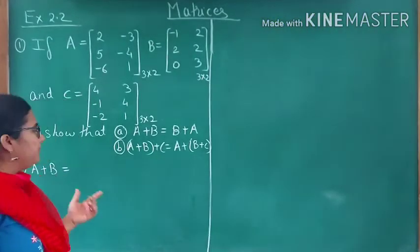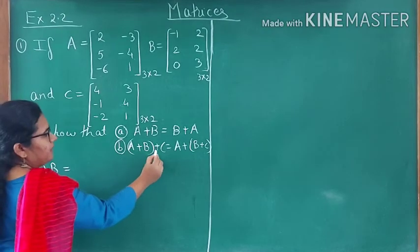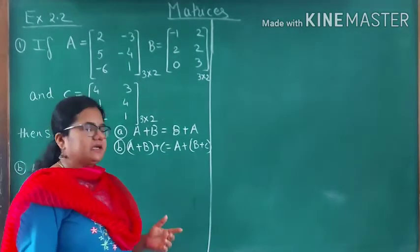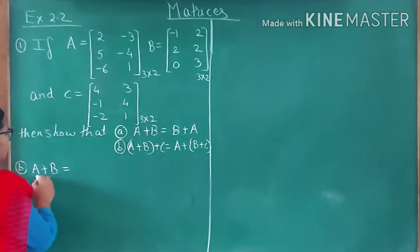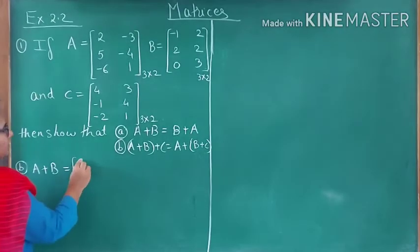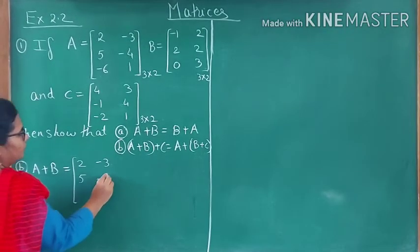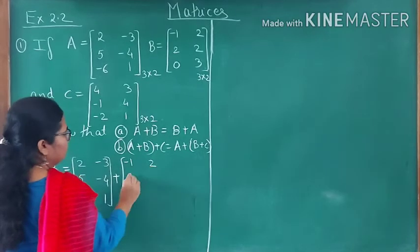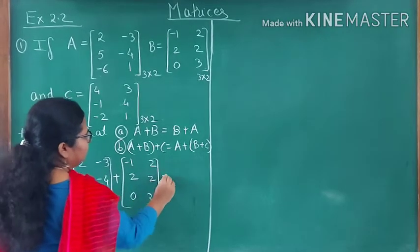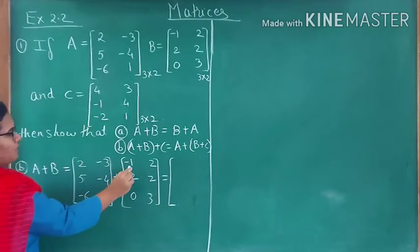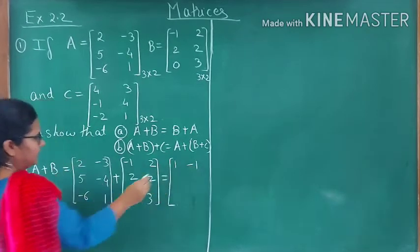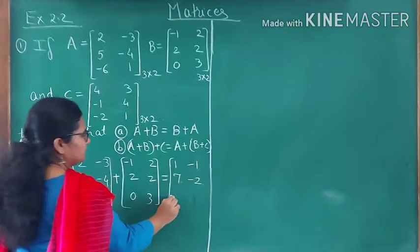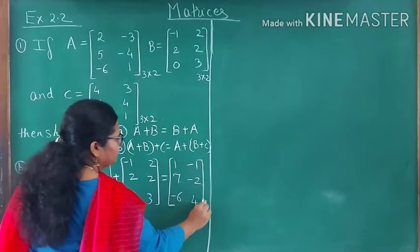Now for part B: we must prove (A+B)+C = A+(B+C). In the LHS, first solve the bracket — find A plus B. Matrix A: [4, 4; 6, 1] plus matrix B: [-1, 2; 2, 2; 0, 3]. Adding corresponding elements gives [1, -1; 7, -2; -6, 4].